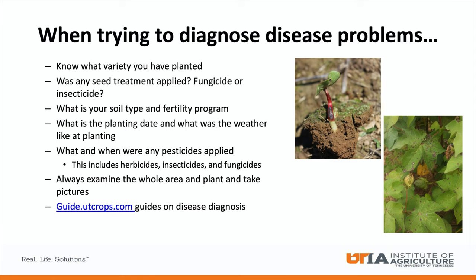When trying to properly diagnose disease problems, there are a number of different things to know or find out. Knowing what variety is planted can help when determining if it is resistant to a certain disease. Knowing if a seed treatment was applied and what was in it is also crucial. Some problems can be nutritional issues that mimic disease, so knowing your soil type and fertility helps distinguish disease from fertility problems. Planting date and conditions are important, as some diseases favor earlier or later planting as well as warmer or cooler conditions. Some diseases can be mimicked by pesticide damage, especially with herbicides.